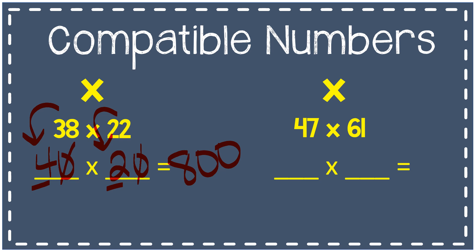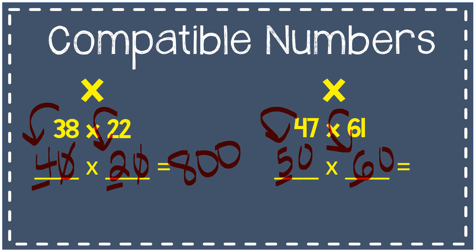Next example: 47 times 61. Let's round to the nearest ten. 47 rounds to 50, and 61 rounds to 60. Now I can use these compatible numbers — they're compatible with my original numbers. 5 times 6 is 30. I have a zero at the end of 50 and a zero at the end of 60, so my final answer will be 3,000. It's not the exact answer, but it's close, and that will work just fine.